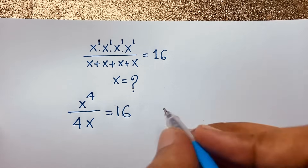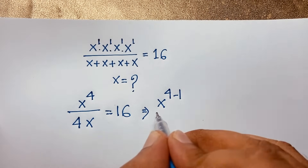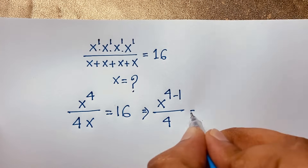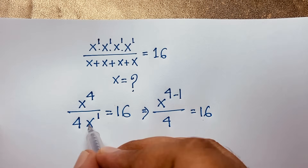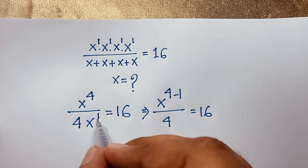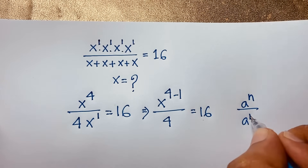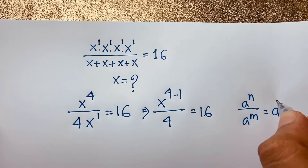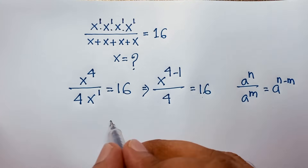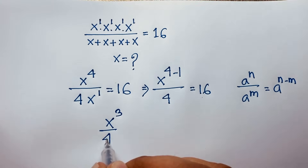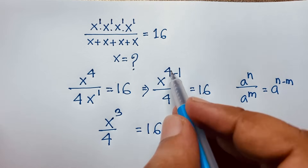Now you can see this expression becomes x to the power 4 minus 1 over 4, is equal to 16. Because we know that a to the power n over a to the power m equals a to the power n minus m. So subtracting the exponents gives us x to the power 3 over 4 is equal to 16. This is 4 minus 1, which equals 3.